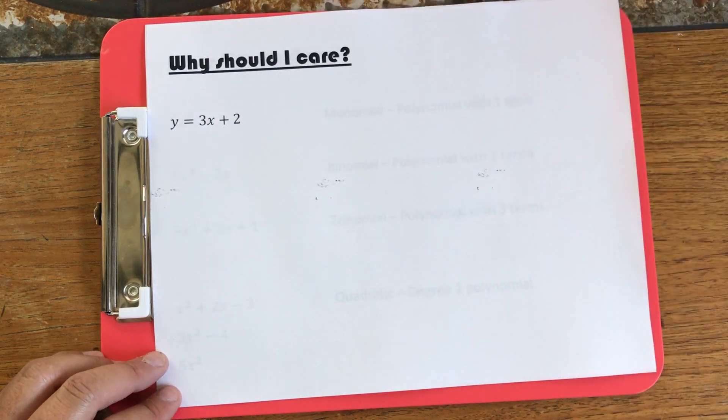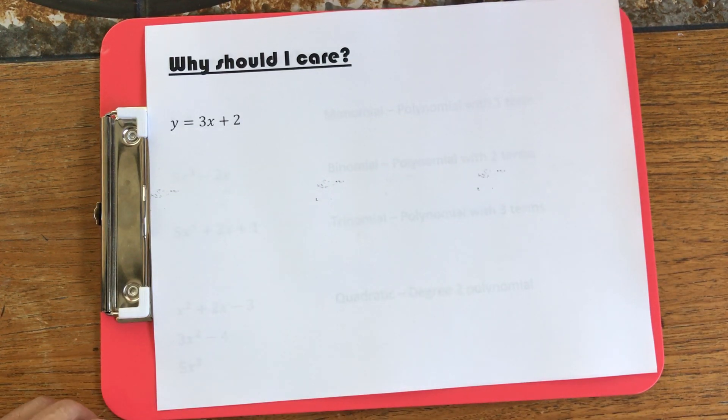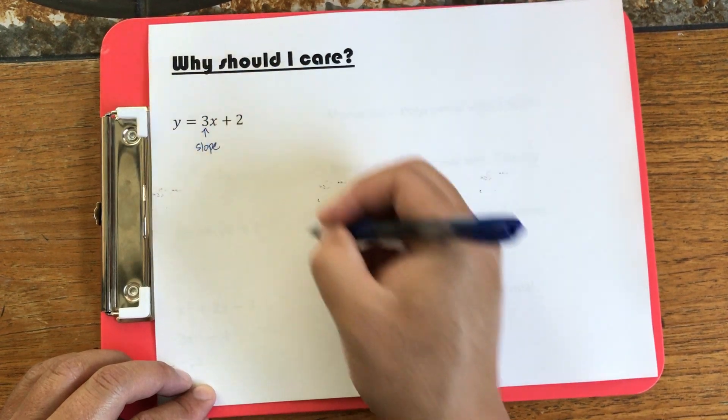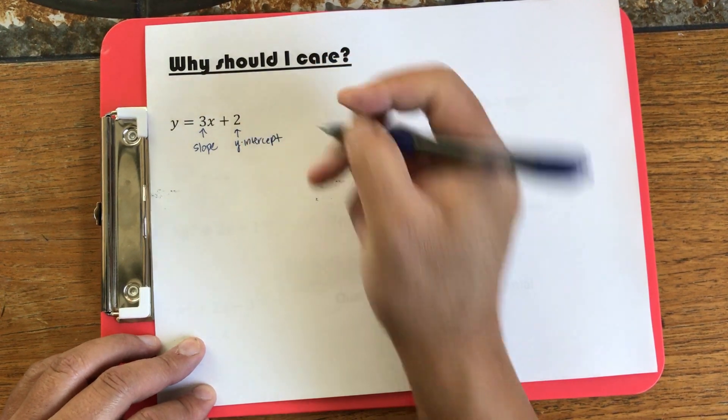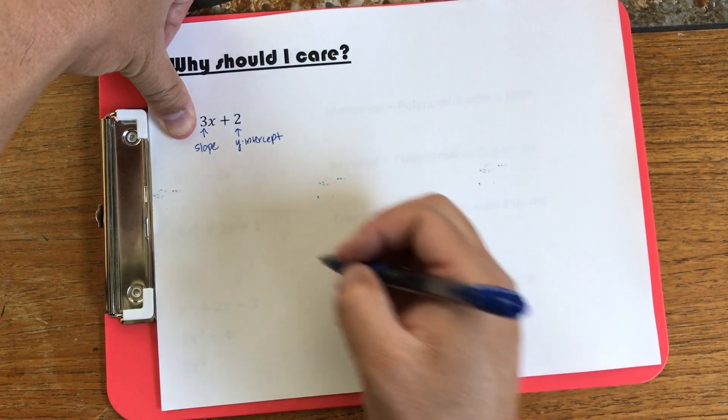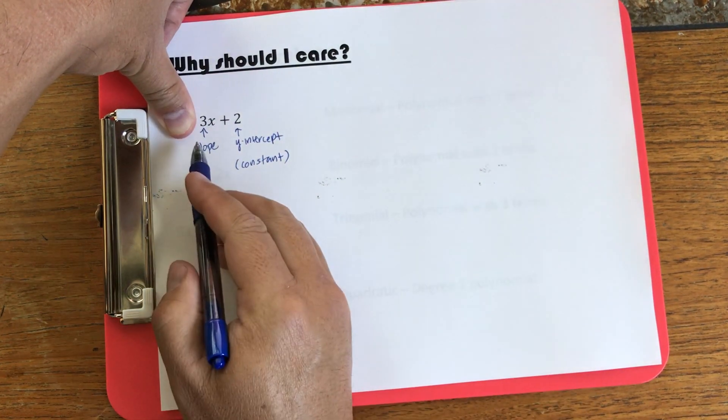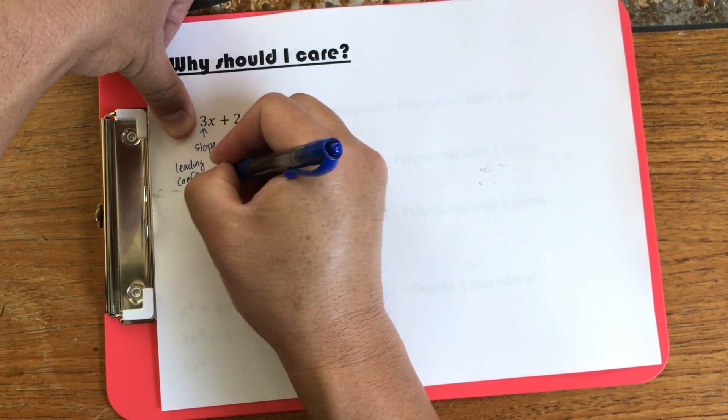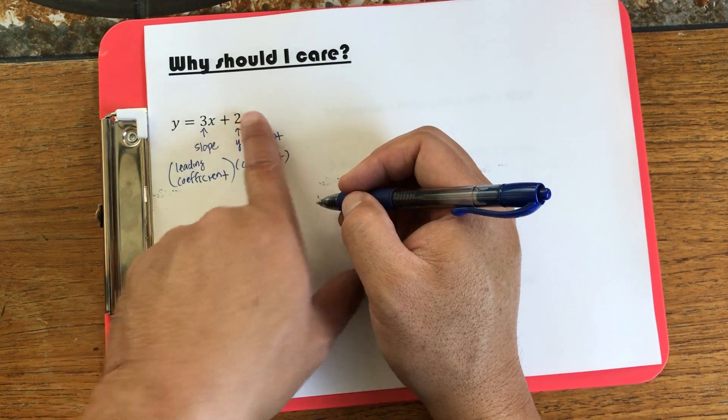Okay, next. Now, the next question is, why should I care? Let's look at a linear equation. This right here is a graph of a line. This is my slope. And this is my y-intercept. Now, if we sort of ignore the y, we can think of this as a polynomial. My constant is 2. And 3 is my leading coefficient. So the leading coefficient is the coefficient in the term that has the largest exponent.